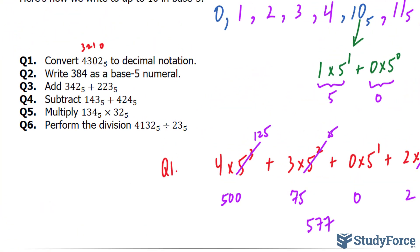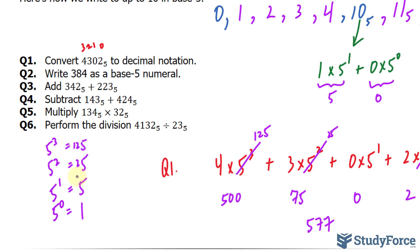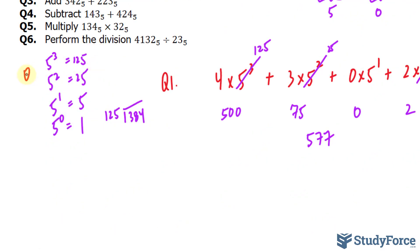Question 2: Write 384 as a base 5 numeral. It helps to know the powers of 5: 5 to the power of 0 is 1, 5 to the power of 1 is 5, 5 to the power of 2 is 25, and 5 to the power of 3 is 125. Anything larger than 125 will not divide into 384, so we don't worry about 5 to the power of 4. We will be using 125 because that's the largest that will divide into 384.